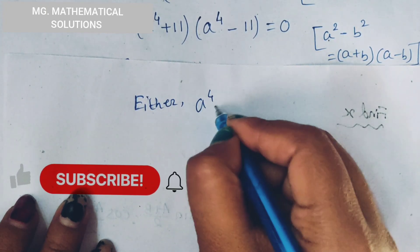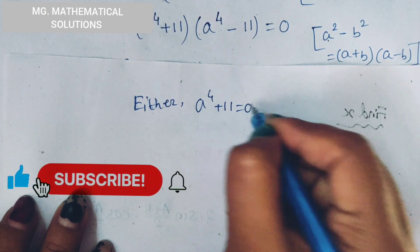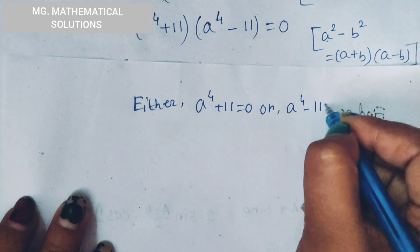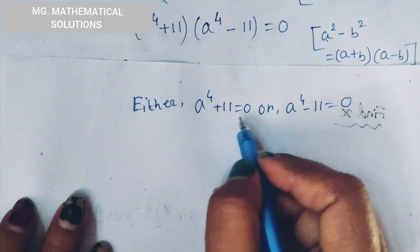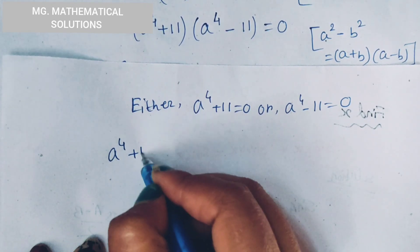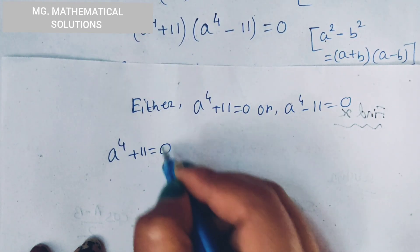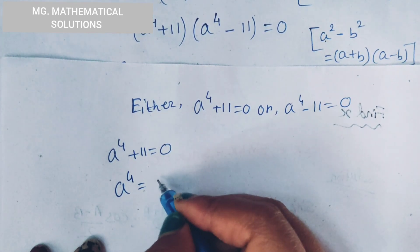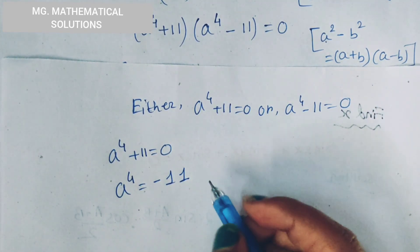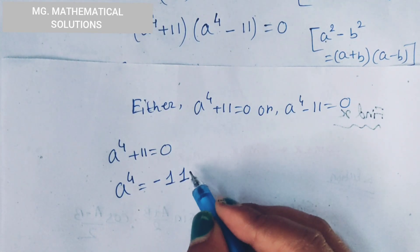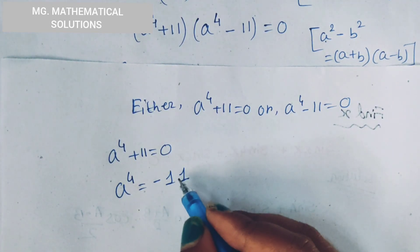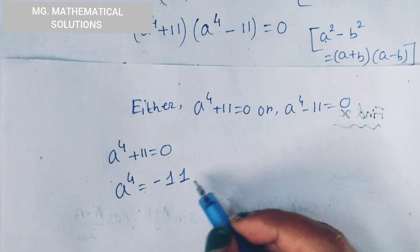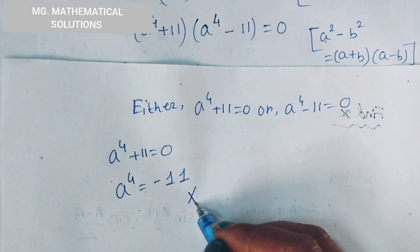Either a to the power 4 plus 11 equal to 0, or a to the power 4 minus 11 equal to 0. First, we solve the equation a to the power 4 plus 11 equal to 0. So a to the power 4 equal to minus 11. We see that this is a minus value. If we take the root, then this is a complex number, so we reject this value.